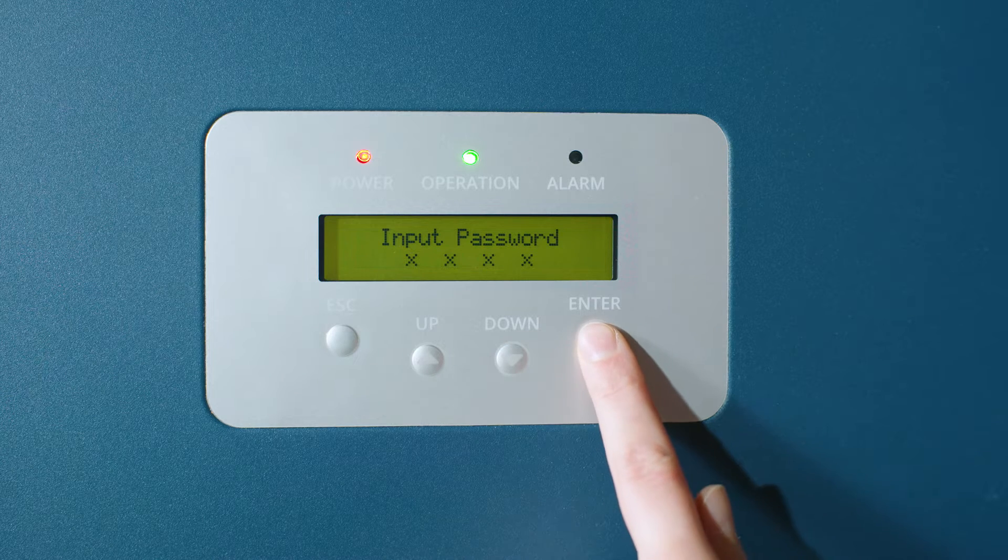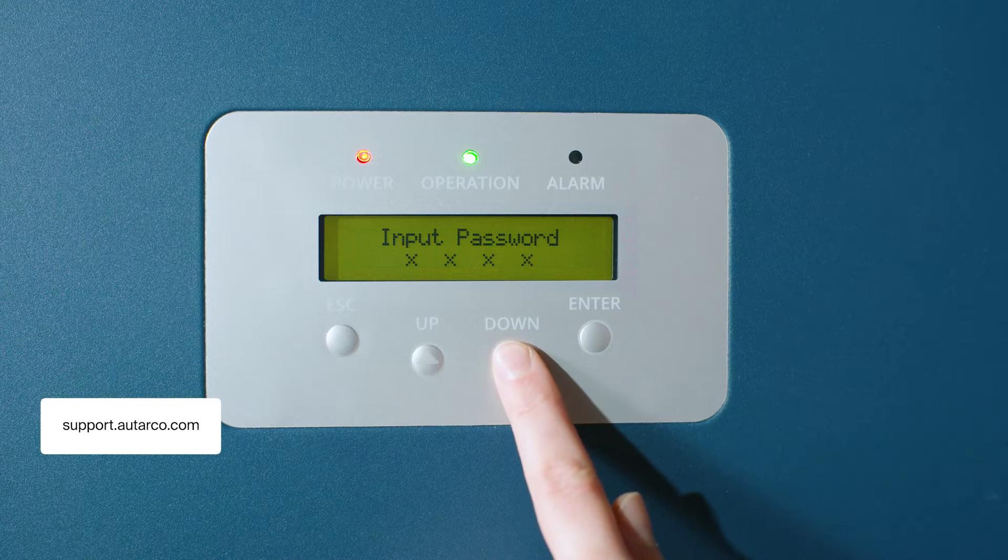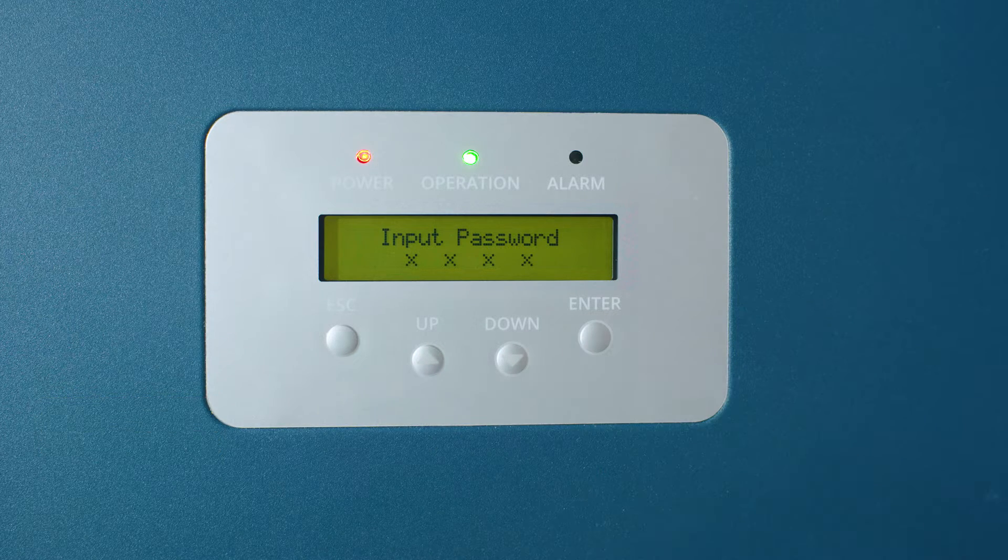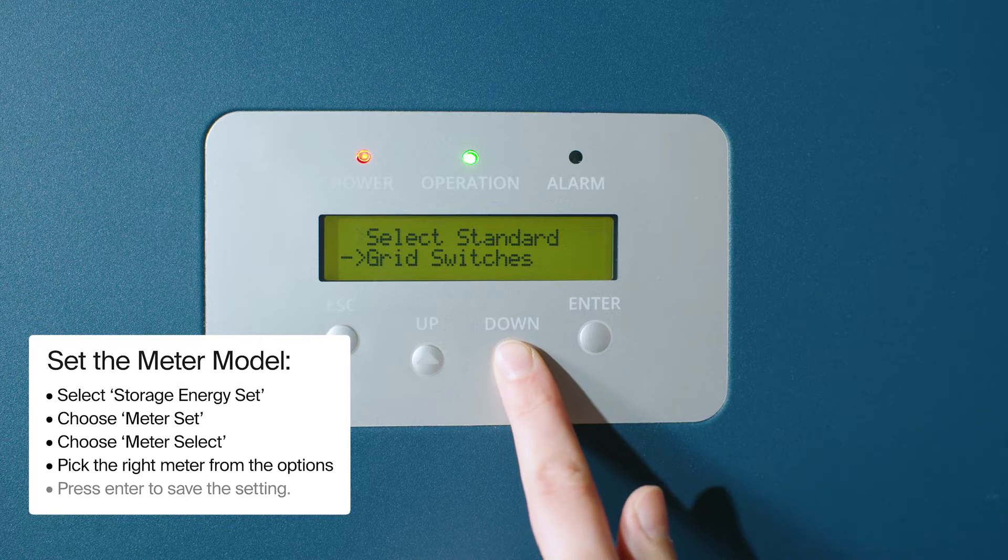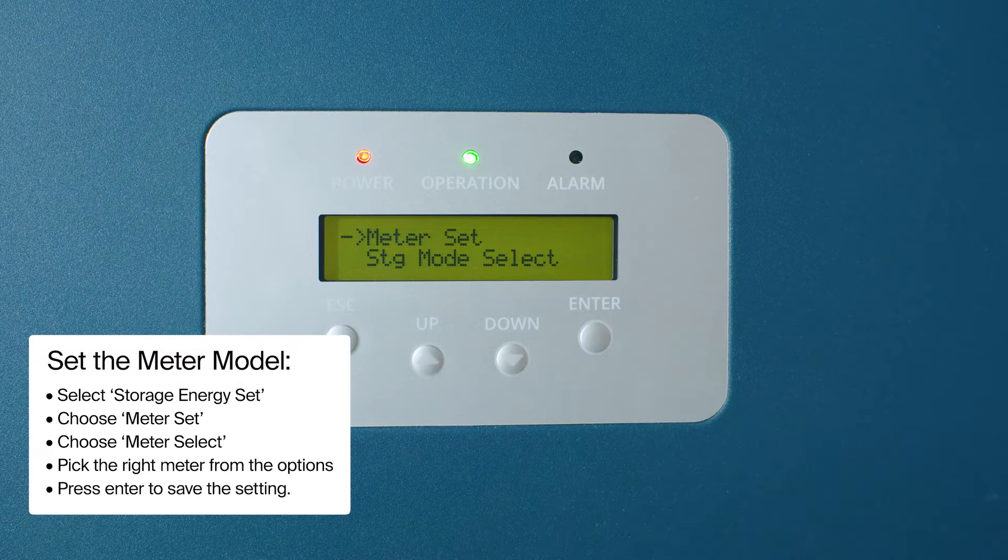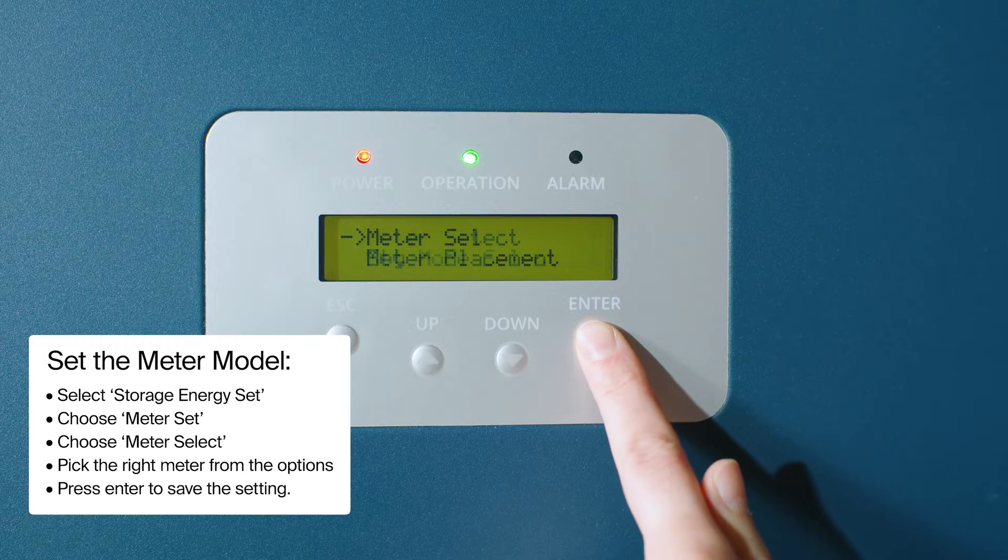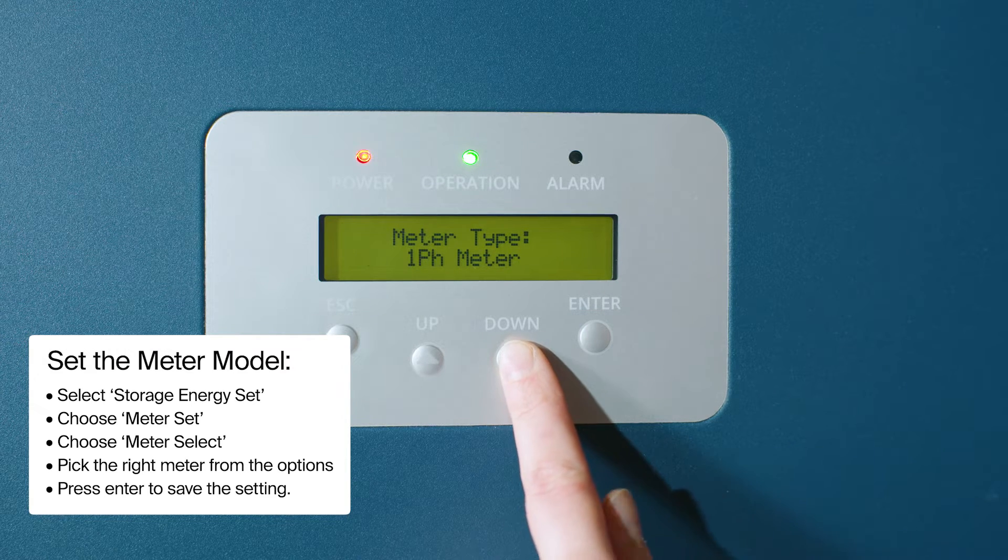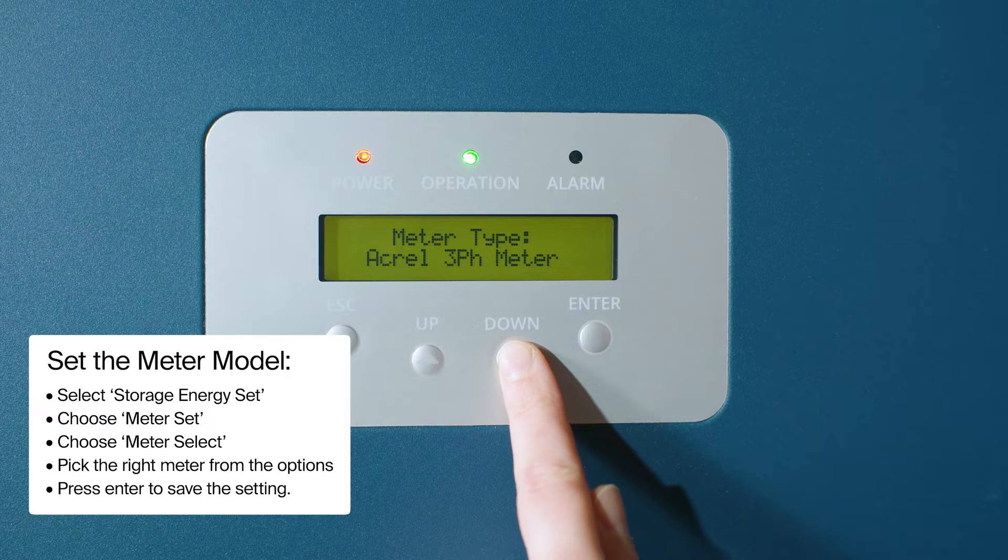First, go to Advanced Settings in the menu and enter the password. You can contact Autarco support for instructions. Set the meter model, select Storage Energy Set, choose Meter Set, choose Meter Select, pick the right meter from the options, and press Enter to save the setting.